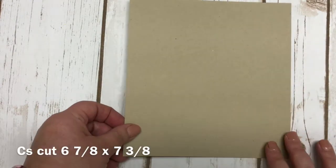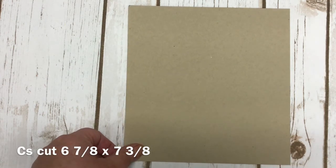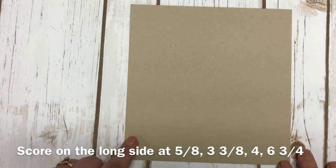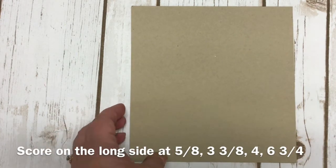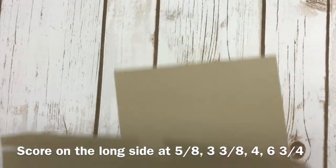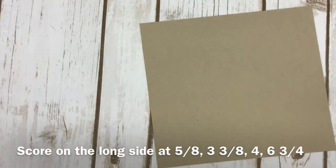We are going to start with a piece of crumb cake cardstock that is cut 6 7/8 by 7 3/8, and from there we're going to be doing some scoring. Let me make sure I tell you on which side first. We're going to be scoring on the long side.